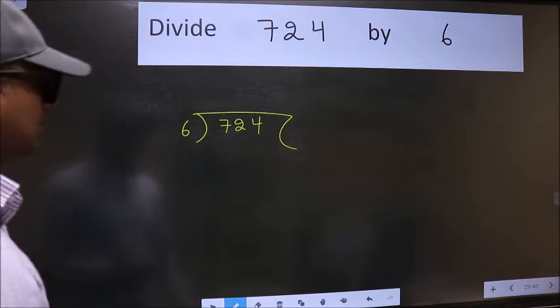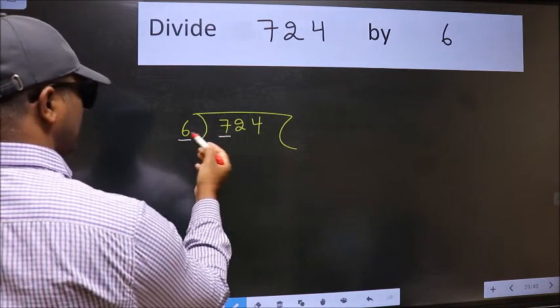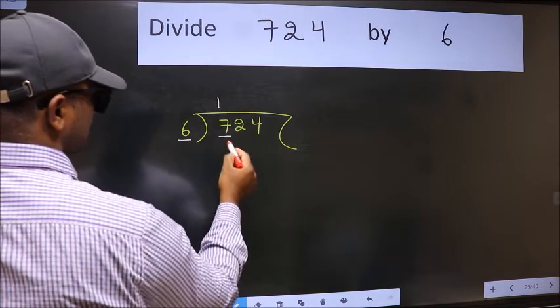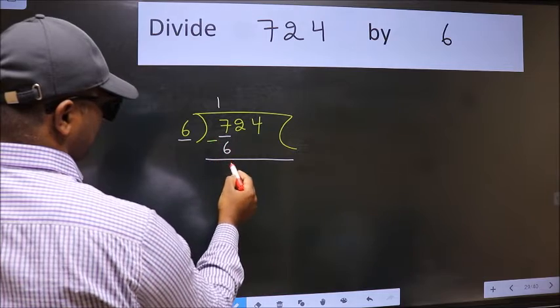Next, here we have 7 and here 6. A number close to 7 in the 6 table is 6 once, which is 6. Now we should subtract, and we get 1.